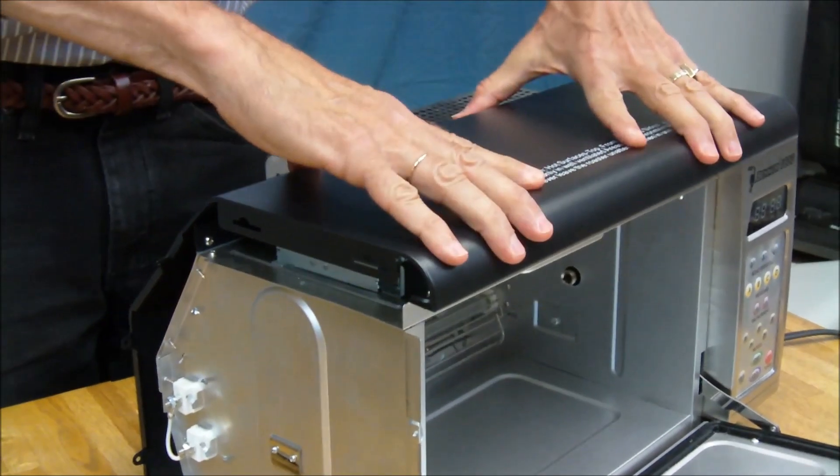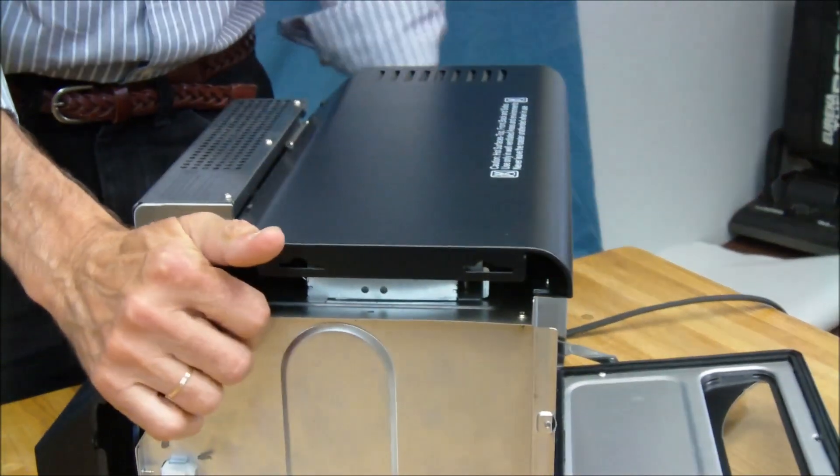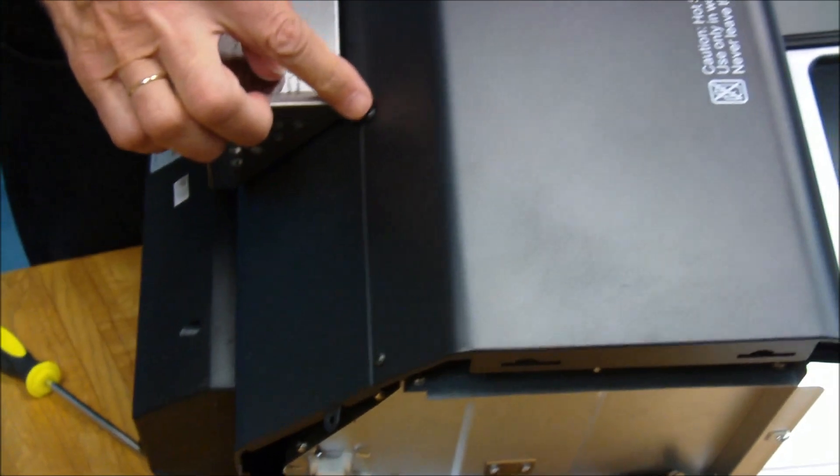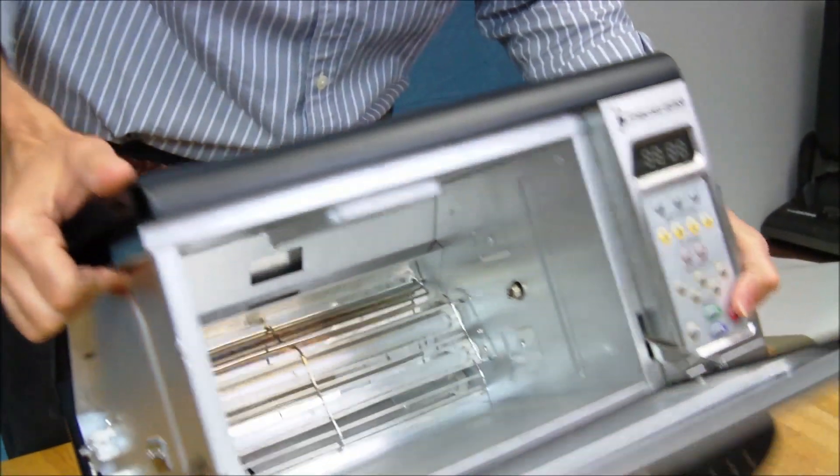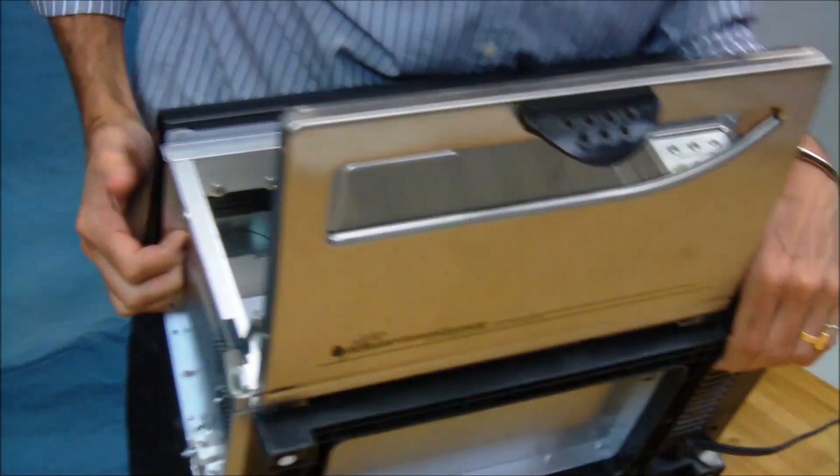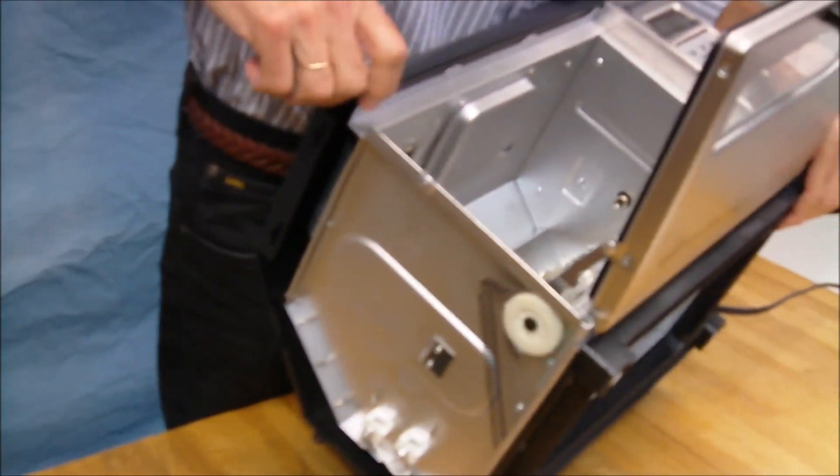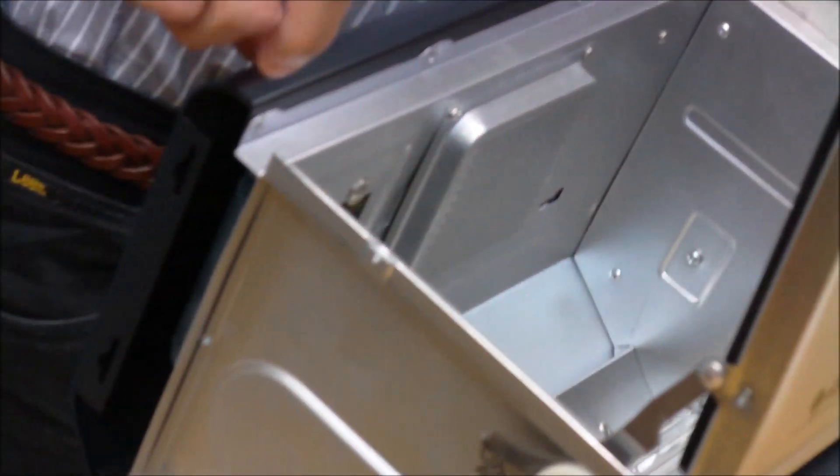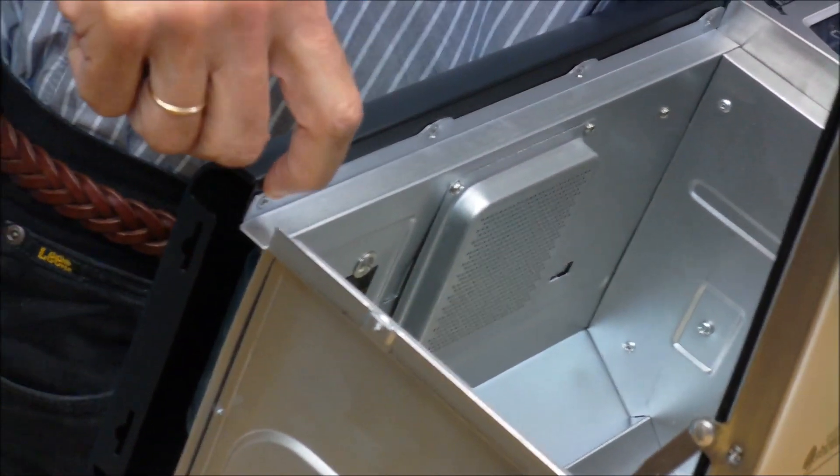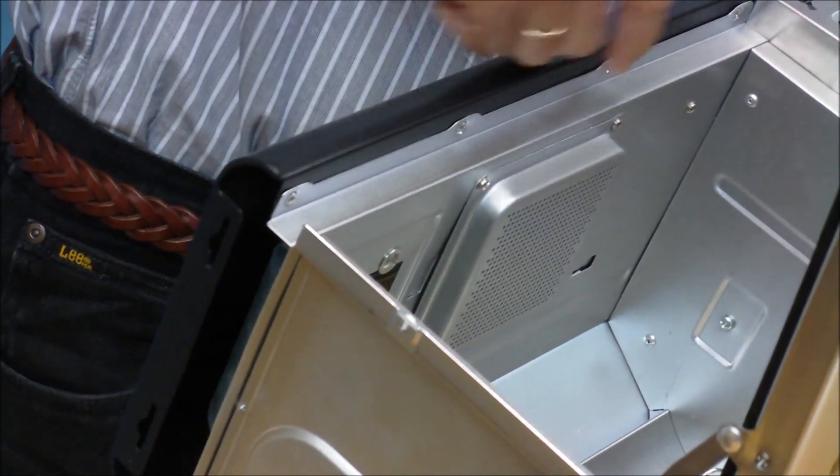To remove the top section, we're going to start out removing these four screws that are along the back. And then we're going to move to the front, inside the door. And using that shorter screwdriver with the stubbier point, we're going to remove these four up in here too. One, two, three, and four.